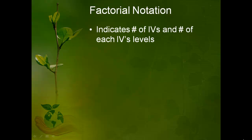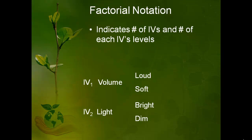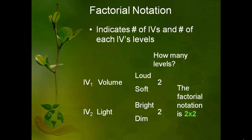What you need to do to determine the factorial notation is you need to know how many levels each variable has. So the first variable, volume, has two levels: loud and soft. And the second variable, light, also has two levels: bright and dim. So we would say that the factorial notation for this study is a two by two. So if I were using that in a sentence, I would say this is a two by two study.